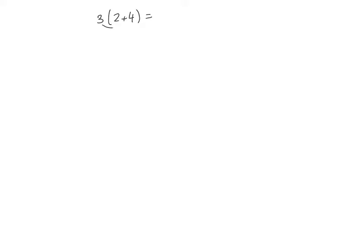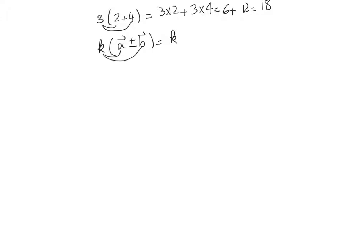Remember, in algebra, the distributive property of numbers. For instance, if I have something like 3 times (2 plus 4), this is the same as 3 times 2 plus 3 times 4, which is 6 plus 12, which is 18. Vectors have the same property too. Meaning, if I have a number like k, a real number, multiplied by the sum or difference of two vectors — let's say vector a plus or minus vector b — this is the same as k times a plus or minus k times b. This is the distributive property of vectors.